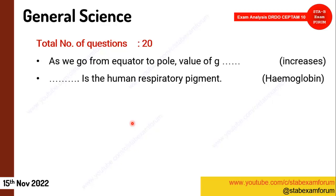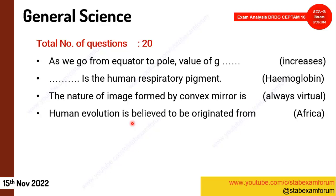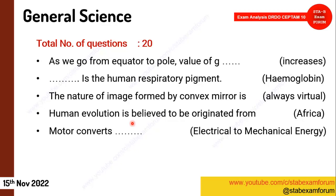The next question from biology: the human respiratory pigment is hemoglobin. Then one question from physics on convex mirror — it always forms a virtual image. One question on human evolution: human evolution is believed to have originated from Africa.